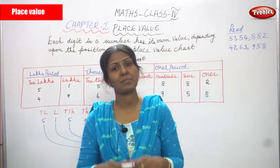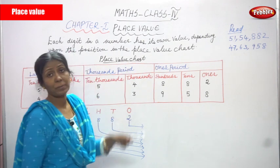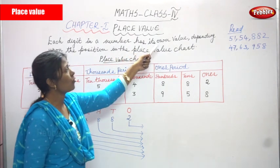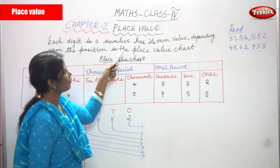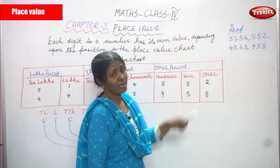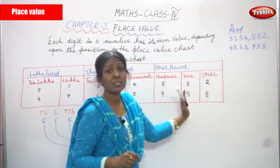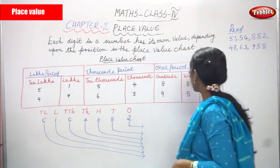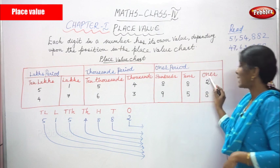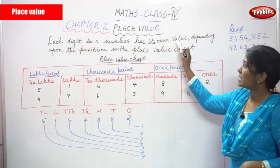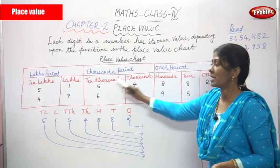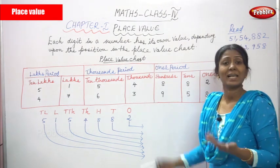So what is the place value? First, we must know what is place value. I'm giving the definition for the place value here - just look at the board. Each digit in a number has its own value depending upon the position in the place value chart. So whatever the number in the place value chart, each digit has its own value.